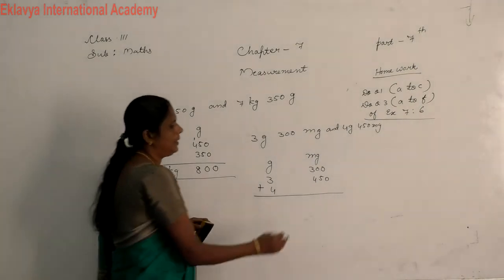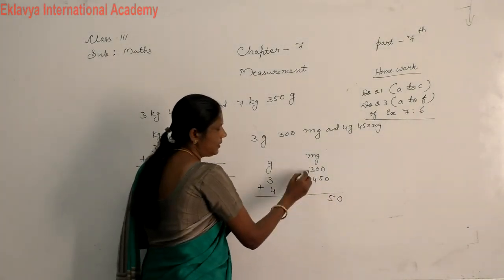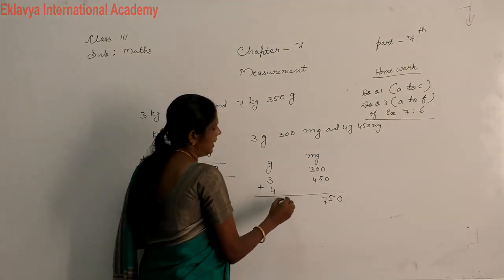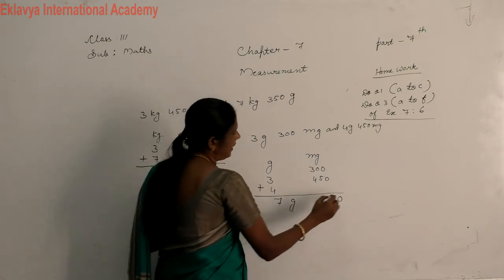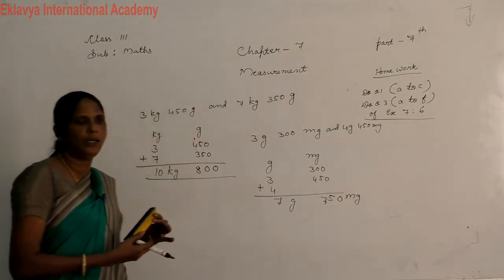Then 0, 0 plus 5, 5. 3 plus 4, 7. Then 7. Answer is 7 gram, 750 mg.